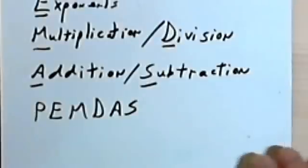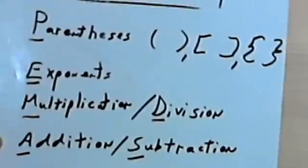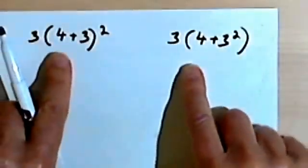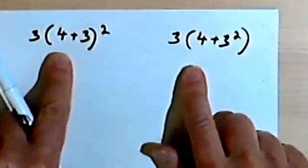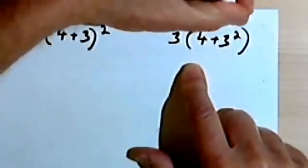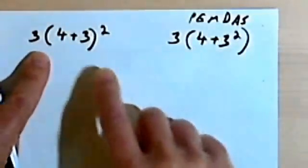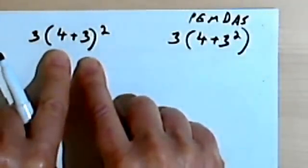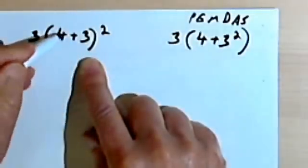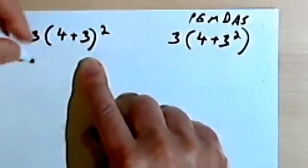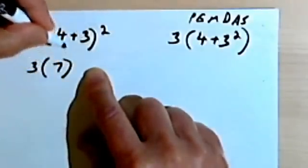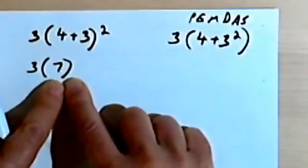So let's look at some problems and see how we apply the order of operations to them. Here we've got two different situations — they look pretty much alike, but they're not exactly the same. The order of operations — let's write PEMDAS at the top of the page. First we look and see if there are parentheses, which we have, and we do whatever is called for inside the parentheses. So this tells us we have to add these two numbers together, giving us 3 times 7.